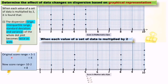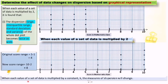Now we look at the original score range: 5 minus 1 equals 4, and the new score range equals 10 minus 2 equals 8, which is double. When each value of a set of data is multiplied by a constant, the measures of dispersion will change.